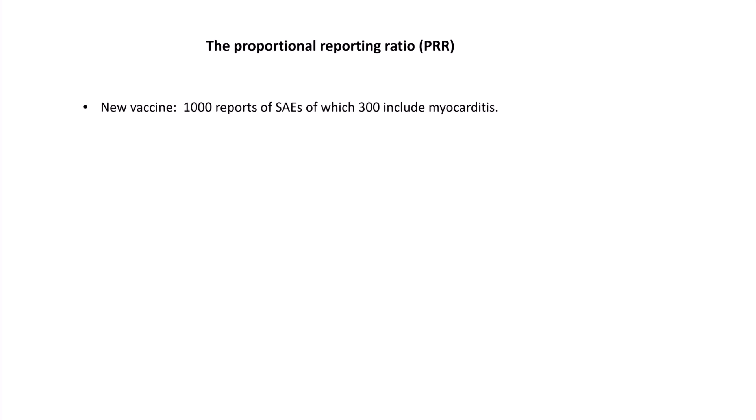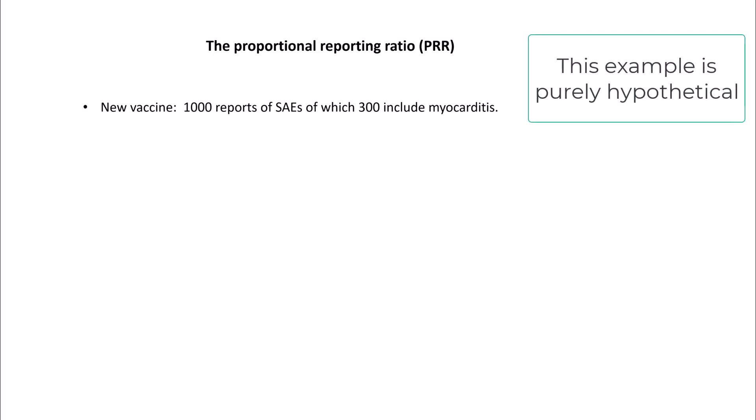Let's take an example. Suppose that in VAERS we find that for the new vaccine there are 1,000 serious adverse event reports and 300 of these include myocarditis, and suppose that in VAERS for all other vaccines there are 2,000 reports of serious adverse events of which 100 include myocarditis.